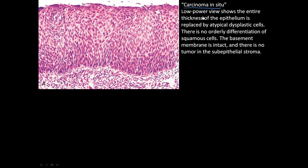In this low power view, the entire thickness of the epithelium is replaced by atypical dysplastic cells. There is no orderly differentiation — you can see these cells going different directions, some more spaced out, some oriented differently. There is no orderly differentiation of squamous cells. The basement membrane is intact, meaning this dysplastic growth has not invaded into the deeper layers of the tissue.